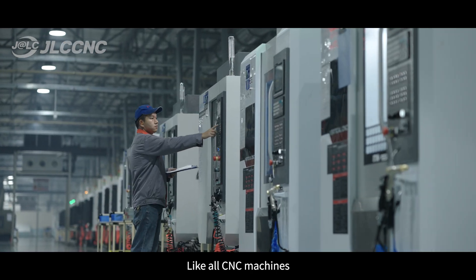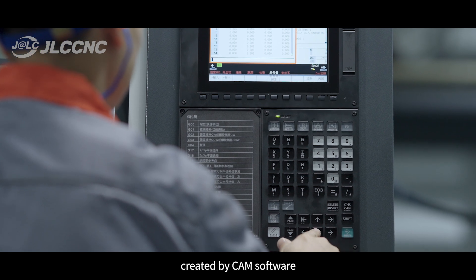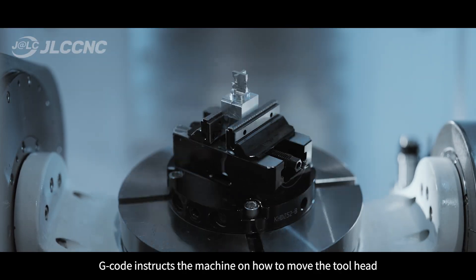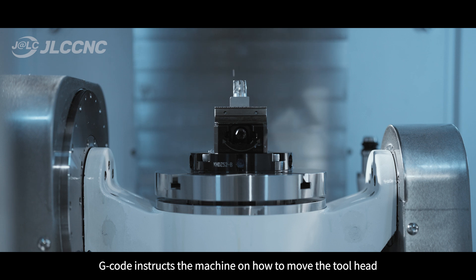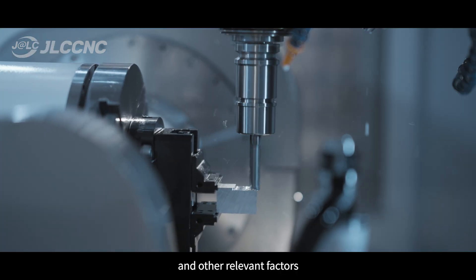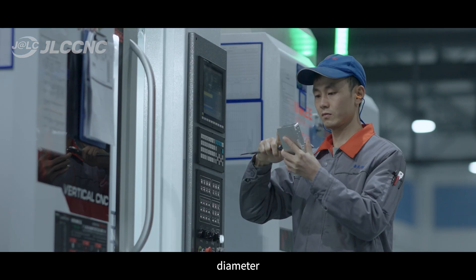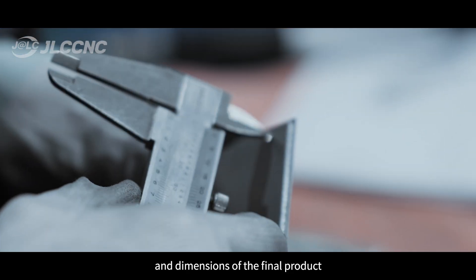Like all CNC machines, CNC milling machines are controlled by G-code created by CAM software. G-code instructs the machine on how to move the tool head, the speed of the rotating tool, cutting depth, and other relevant factors until achieving the desired shape, diameter, and dimensions of the final product.